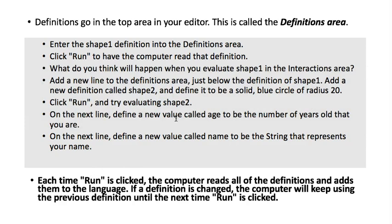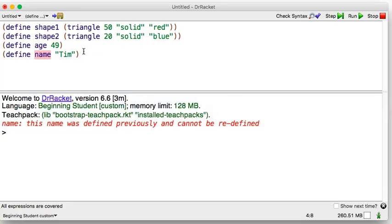Define a value called name to be a string that represents your name. Each time Run is clicked, the computer reads all the definitions and adds them to the language. When we're using define, we're actually defining new words in our computer language. If a definition is changed, the computer will use the previous definition until the next time Run is clicked.